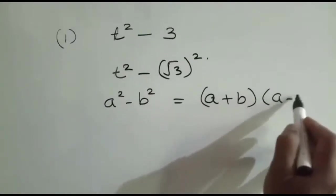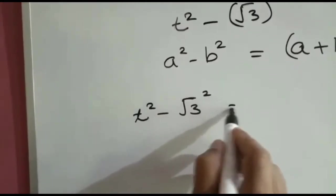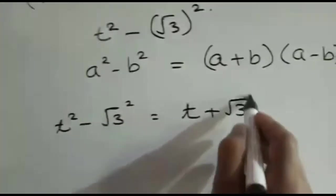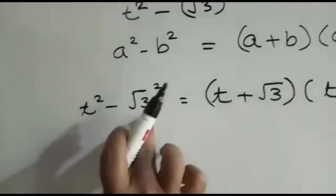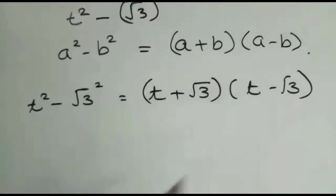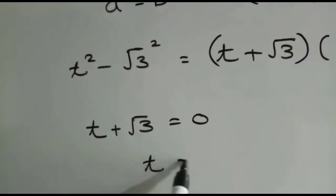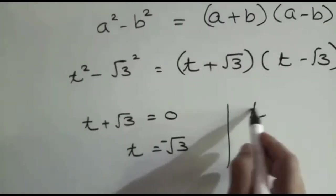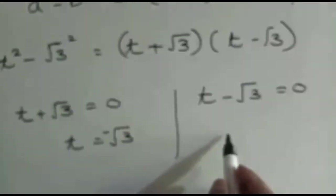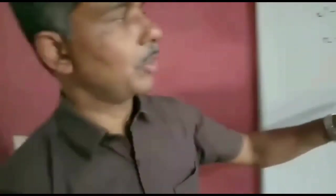So t² - (√3)² is factored as (t + √3) multiplied by (t - √3). Thus the quadratic polynomial is factored into two linear polynomials. After getting linear polynomials, we equate each linear polynomial to zero. So t + √3 = 0 implies that t = -√3. Similarly, the second linear polynomial t - √3 is equated to zero, which becomes t = √3. Thus we get two zeros of the quadratic polynomial as -√3 and √3.